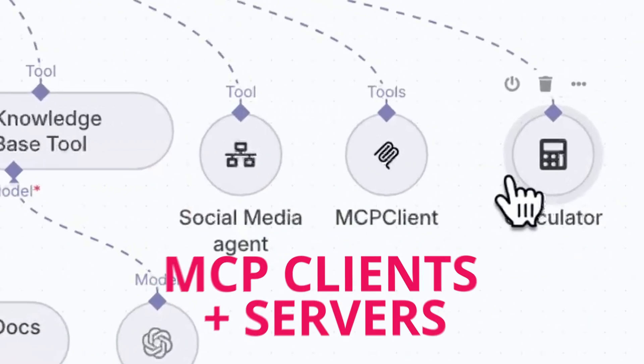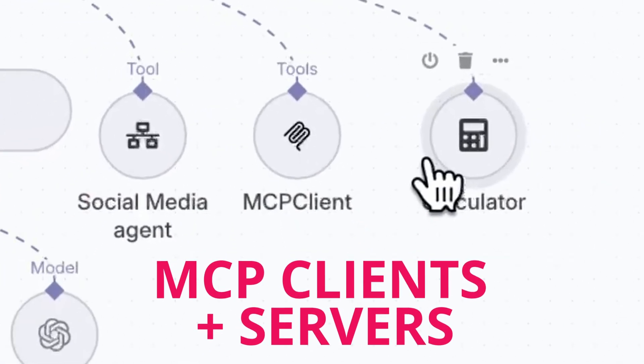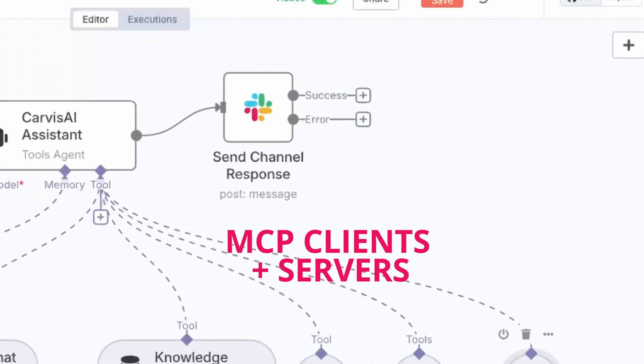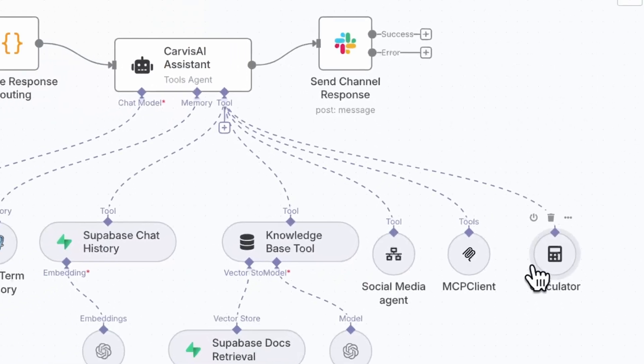Then there's the MCP standard. This gives you the opportunity to expose any workflow as a tool for an external AI model, or let n8n itself call out to external agents for extra muscle. This opens up two-way integrations where ChatGPT, Claude, or Gemini can tap into your data, or you can have your automation use any AI tool you want.